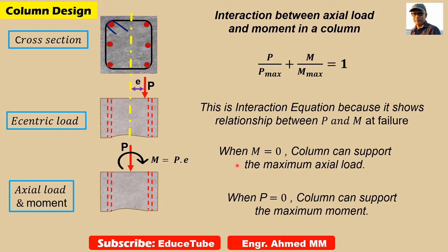As I said, interaction diagram is very important to carry out the design. So we have to know what are the interactions between axial load and moments. It is represented by this interaction equation. This equation shows the relationship between P and M at failure. As I have mentioned here, two conditions: when M equal to 0, column can support the maximum axial load; when P equal to 0, column can support the maximum moments.